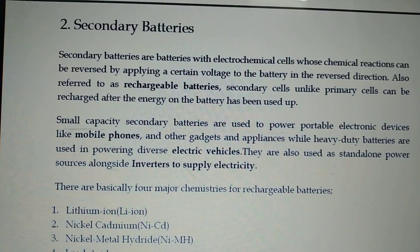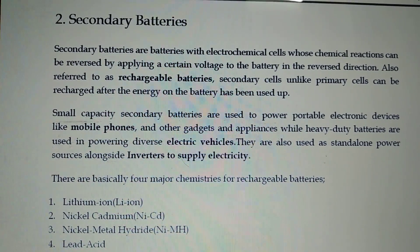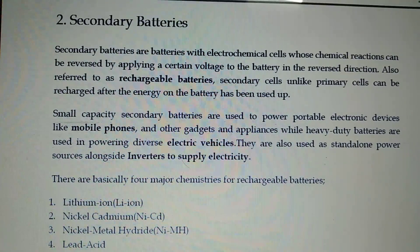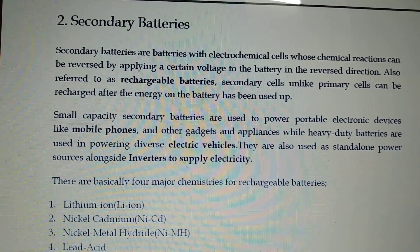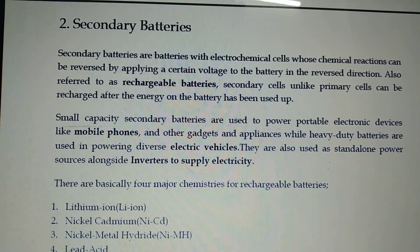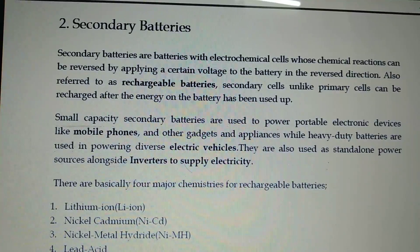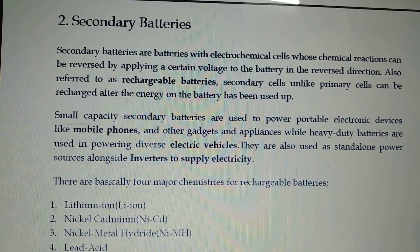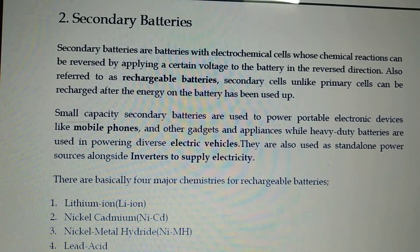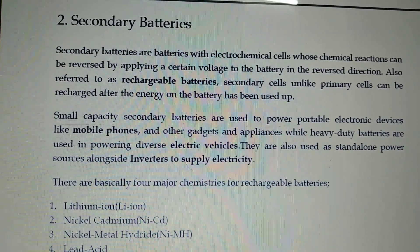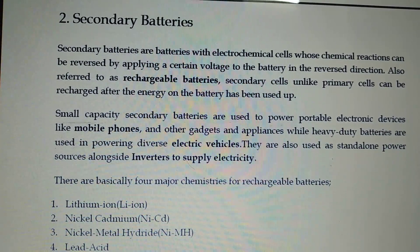Secondary batteries are batteries with electrochemical cells whose chemical reaction can be reversed by applying a certain voltage to the battery in the reverse condition. Also referred to as rechargeable batteries, secondary cells — unlike primary cells — can be recharged after the energy in the battery has been used up.